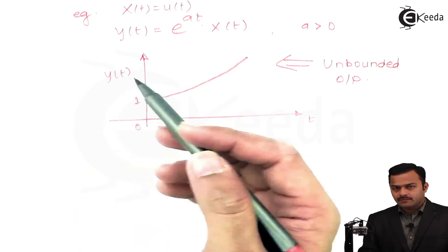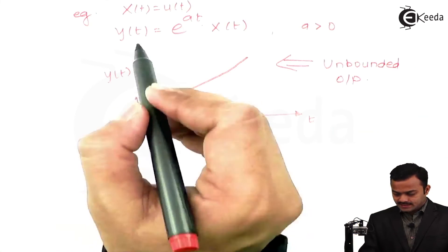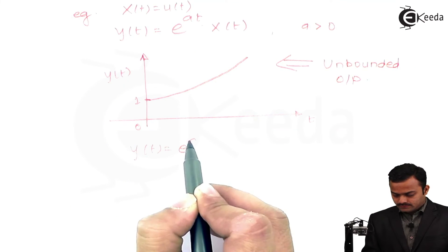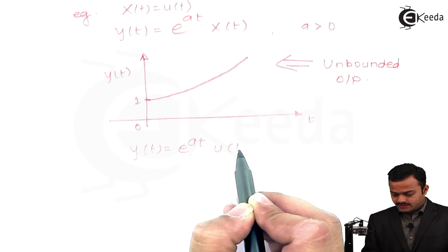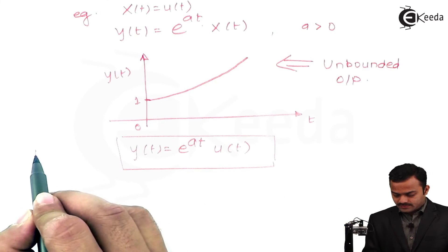What I can say is I am having a bounded input and unbounded output. I can say y(t), which is e^(at) u(t), is an unstable system.